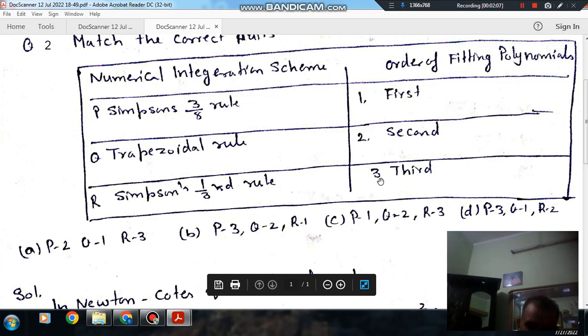Simpson's 3/8 is third. Trapezoidal rule is first order and Simpson's 1/3 rule is second. So answer is option B.